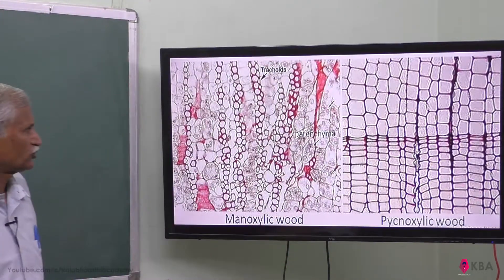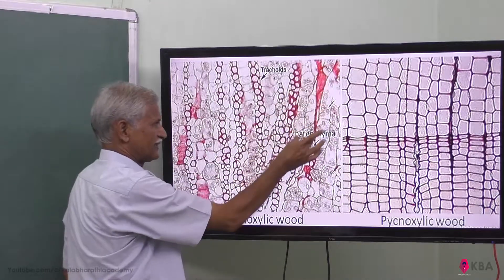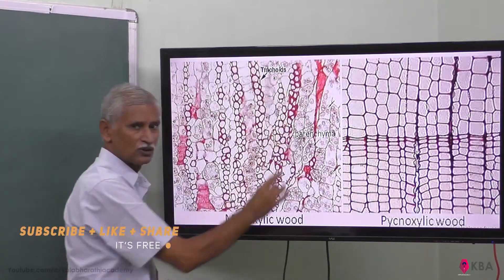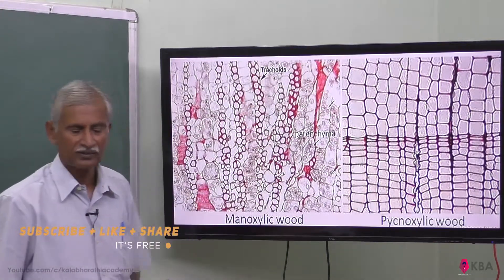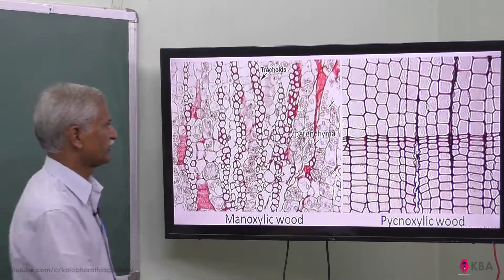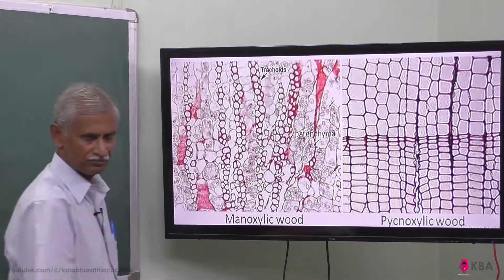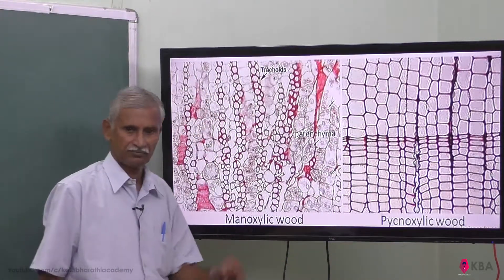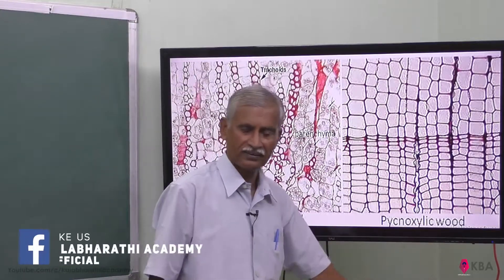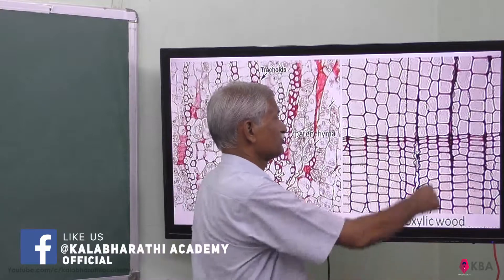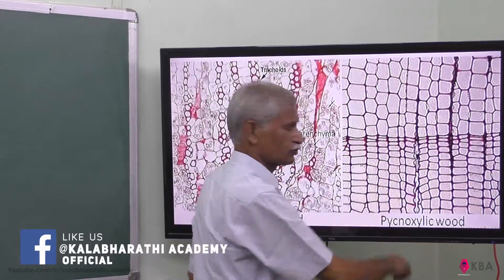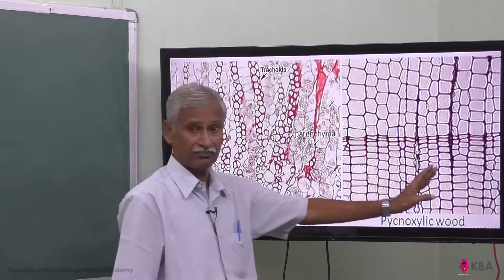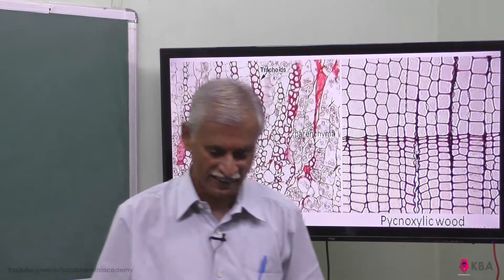To recap: in manoxylic wood, parenchyma is very much present, the wood is soft and porous, and medullary rays are wide. An example is Cycas. In pycnoxylic wood, such as pine, the medullary rays are very close and narrow, parenchyma is very less and tightly packed, so it is hard and non-porous.